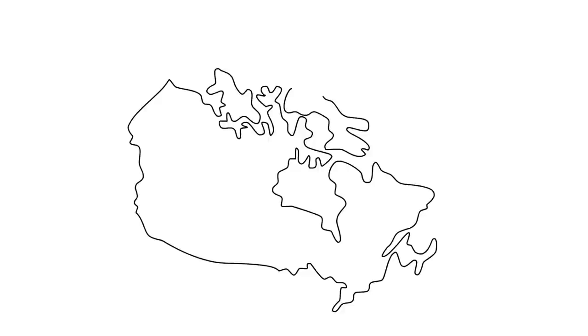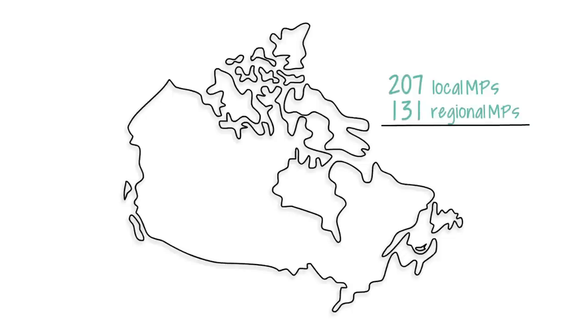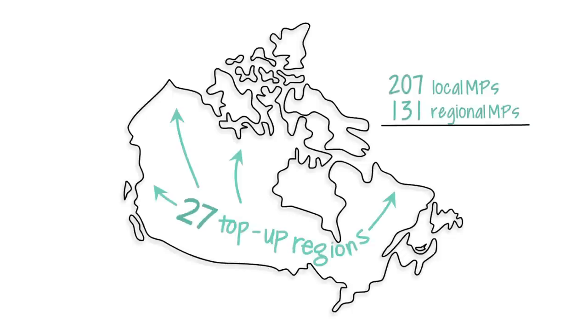Let's look a little more closely at how an MMP system could be designed to be used in Canada. Here's a proposed electoral map for a Canadian MMP voting system. In this version, voters would elect 207 local MPs and an additional 131 regional MPs, elected from 27 top-up regions. The MMP system would not increase the size of our Parliament — it would remain the same size at 338 MPs.